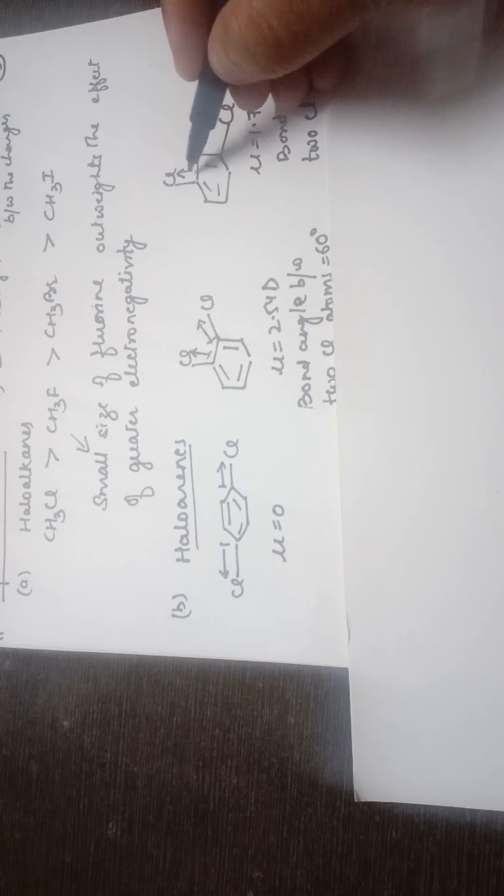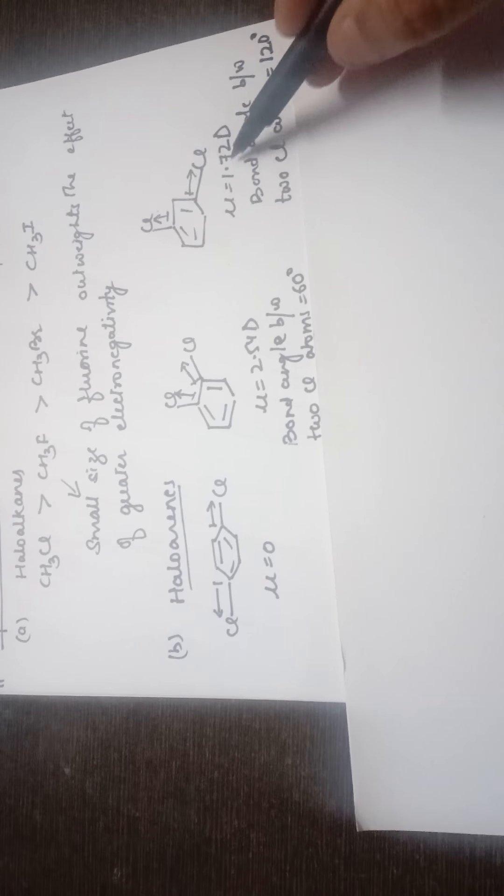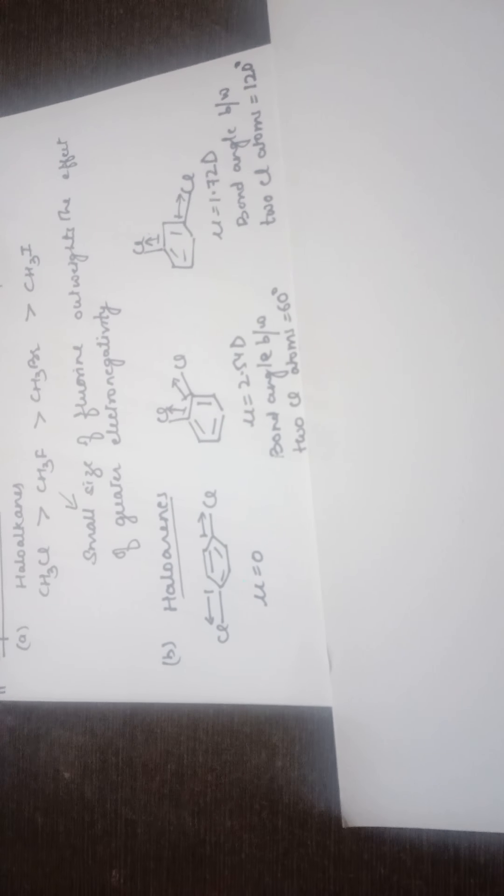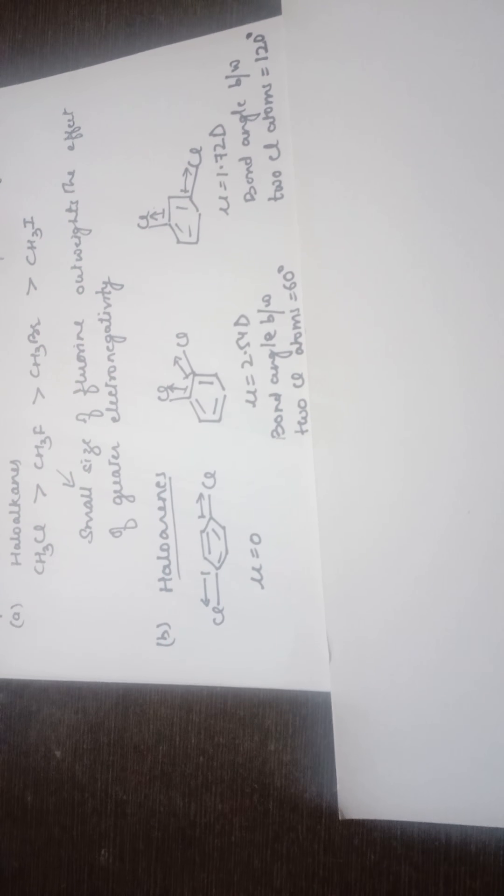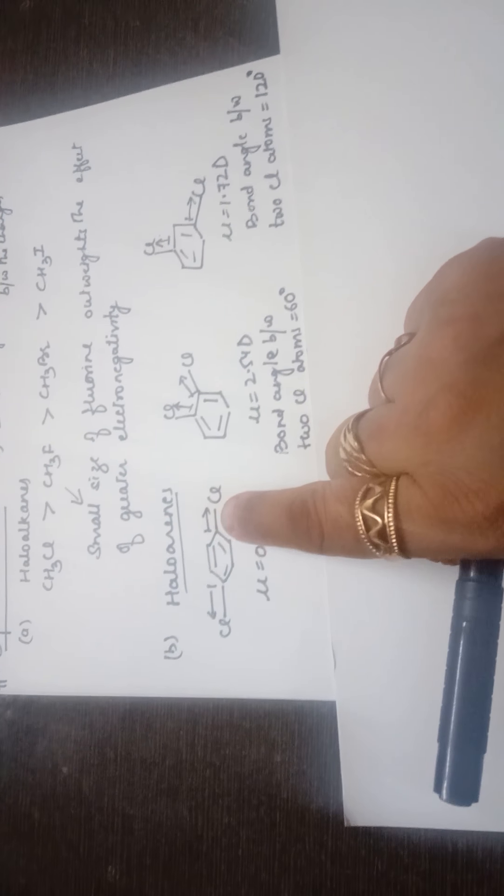For meta-dichlorobenzene, the resultant dipole moment is calculated as the resultant of two vectors with a bond angle of 120 degrees, coming out to be 1.72 D. Since the bond angle in ortho is 60 degrees, both dipole moments give a larger resultant of 2.54 D. A likely exam question is why para-dichlorobenzene has zero dipole moment — you need to draw the structure and explain that the two dipoles cancel out, giving zero resultant.